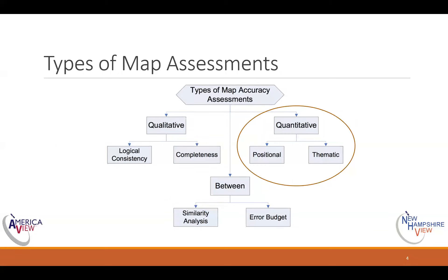There are a whole bunch of different kinds of map accuracy assessments you can do. There are qualitative assessments, quantitative assessments, and some things that fall in between. Qualitative assessments include things like logical consistency — you look at your map and ask: does it make sense, are the things there that are supposed to be there? Another qualitative approach is completeness: is everything there that's supposed to be there, is it obvious that things are missing? It's a 'looks good' assessment, and those things are important.